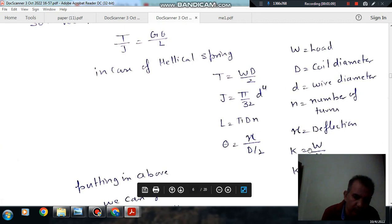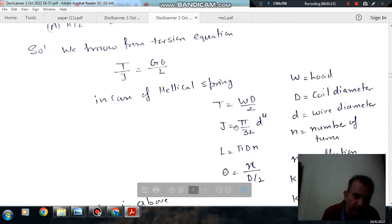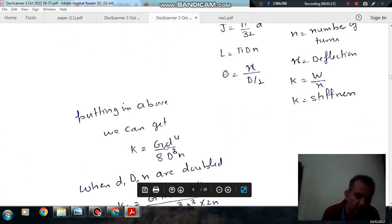And stiffness or spring constant, we know that k is equal to W/x. So putting these values here, we have k is equal to Gd^4 divided by 8D^3n.